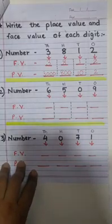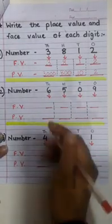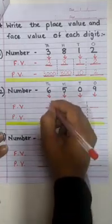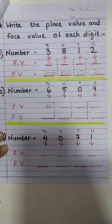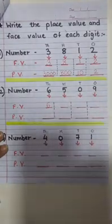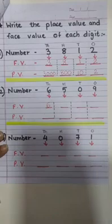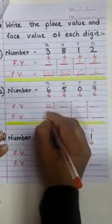Now, let's try solving the other one. The face value of 6 is? Correct, 6. And the place value is? 600. Is it? No. It's 6000 because it is under the column of 1000.